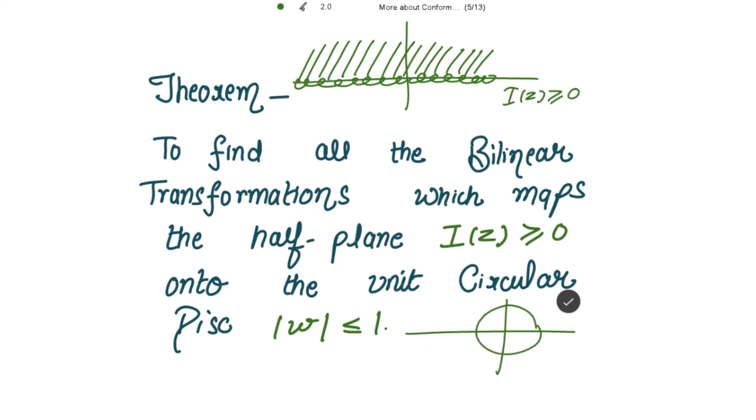So we have to find all bilinear transformations which map this upper half plane onto the unit circular disk. The concept behind this theorem is that for the inverse points with respect to the region in the w-plane, we get the corresponding inverse points with respect to the region in the z-plane, and on that basis we find the required bilinear transformation.